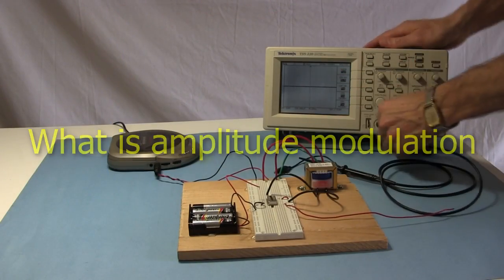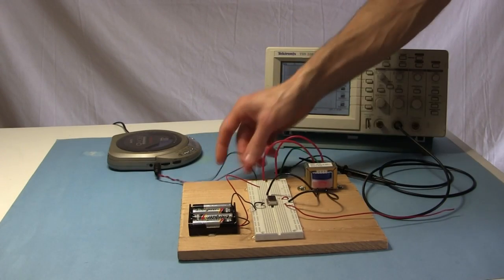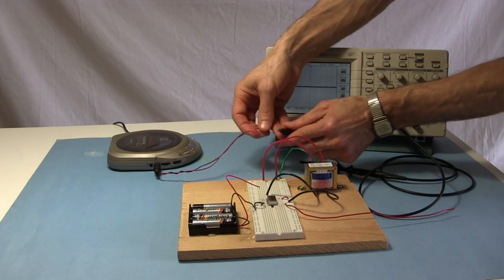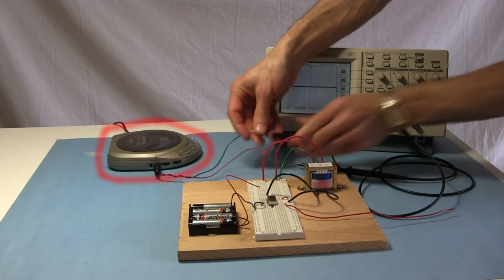Before I can explain what amplitude modulation is, I need to explain why it's done. The place to start is the source of the sound, in my case this CD player.